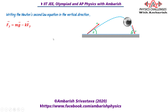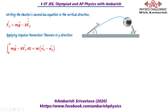We can integrate this force over time. Since mg is a constant force and the total time of flight is capital T, the integral of mg from 0 to T is simply mg·T. For the k·vy term, k is a constant and the integral of vy dt is the displacement in the y direction. Since the projectile goes from ground to ground, the integral of vy dt is zero.